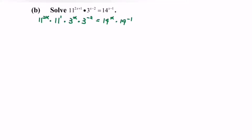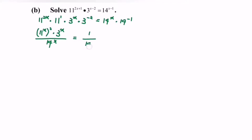Rearrange the equation. So we will have 11 to the power of x, bracket squared, multiplied with 3 to the power of x, over 14 to the power of x, equals 1 over 14, multiplied with 3 to the power of 2, over 11 to the power of 1.